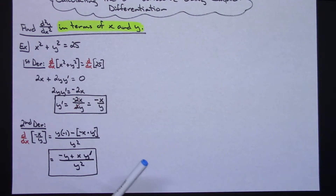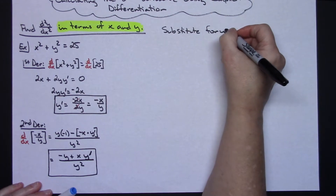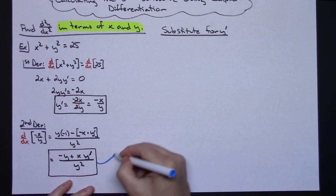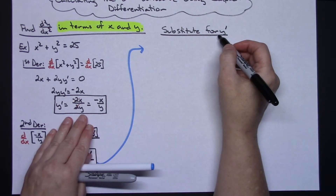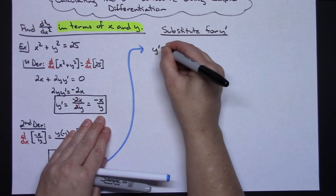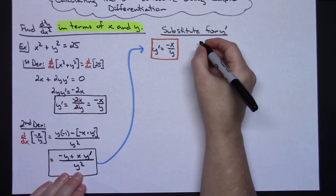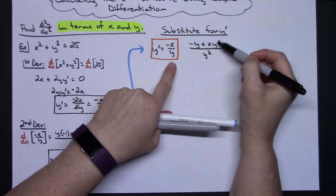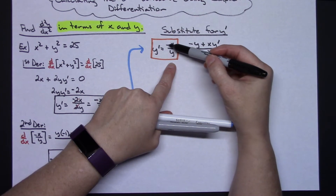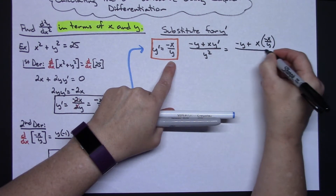Let's come up here and write down: substitute for y'. I'm going to bring this answer up here and do some rewriting. If I'm going to substitute for y', we originally said that y' equals negative x over y, so I need to remember that because that's the part I'm going to substitute. Pulling the derivative down as it sits: negative y plus x·y' all over y². Now I'm going to do the substitution — replacing y' with negative x over y: negative y plus x times (negative x over y), all over y².